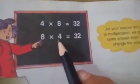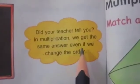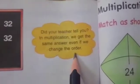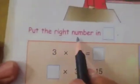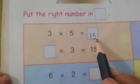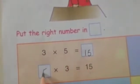4 multiply by 8 is equal to 32, and 8 multiply by 4 is equal to 32. In multiplication, we get the same answer even if we change the order. Okay, put the right number in. 3 multiply by 5 is 15. Now change the order — 3 multiply by 5 is equal to 15 and 5 multiply by 3 is equal to 15.